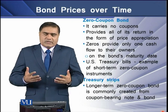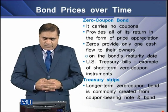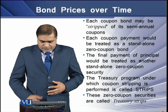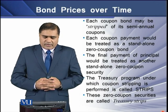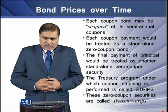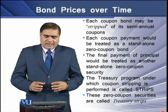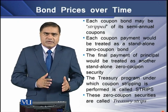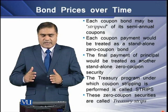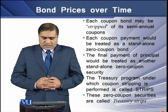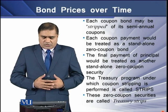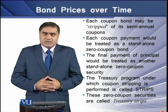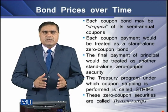Treasury STRIPS are long-term zero coupon bonds commonly created from coupon-bearing notes and bonds. Each coupon bond may be stripped of its semi-annual coupons, and each coupon payment is then treated as a standalone zero coupon bond. The final repayment of principal is similarly treated as a standalone zero coupon bond. The Treasury program under which coupon stripping is performed is called STRIPS, and the resulting zero coupon securities are also called Treasury STRIPS.